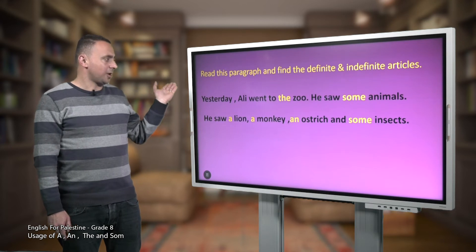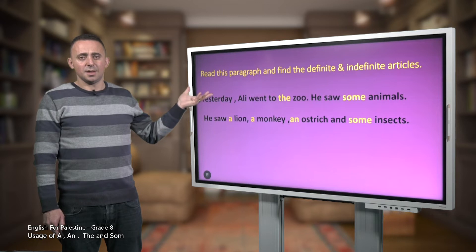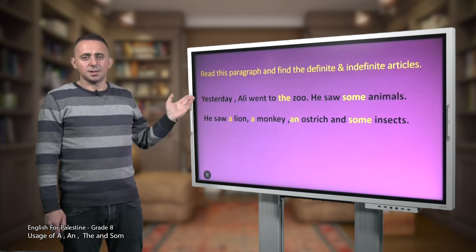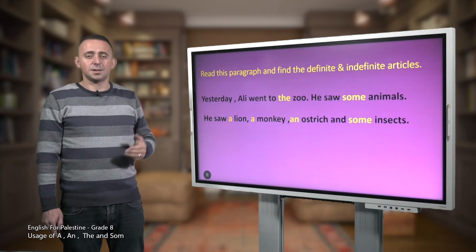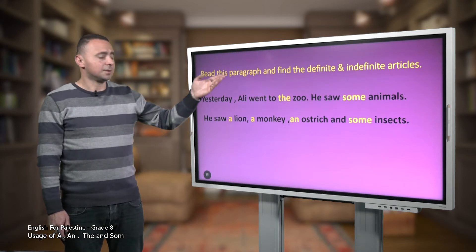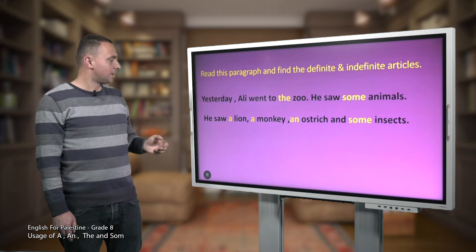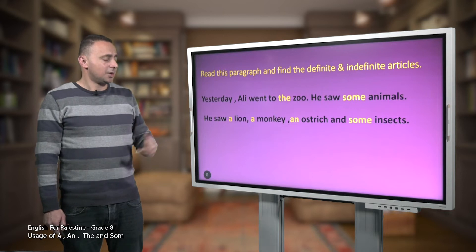Here, we are going to read a paragraph, and then we will find and see the definite and indefinite articles. Yesterday, Ali went to the zoo. He saw some animals. He saw a lion, a monkey, an ostrich, and some insects.